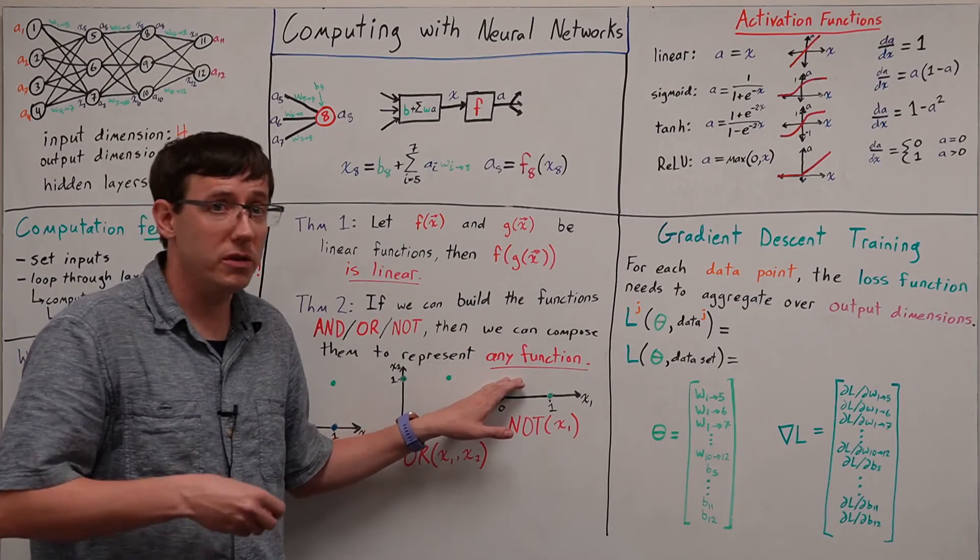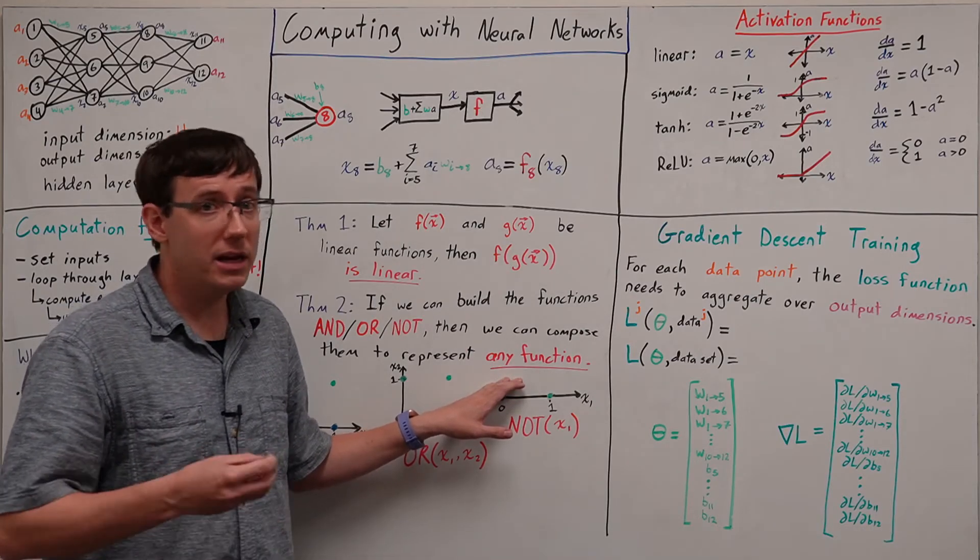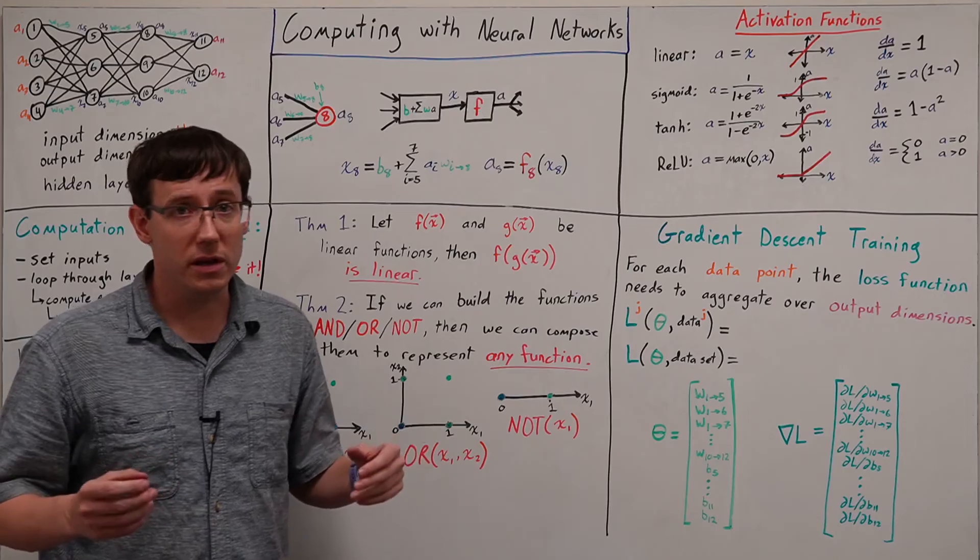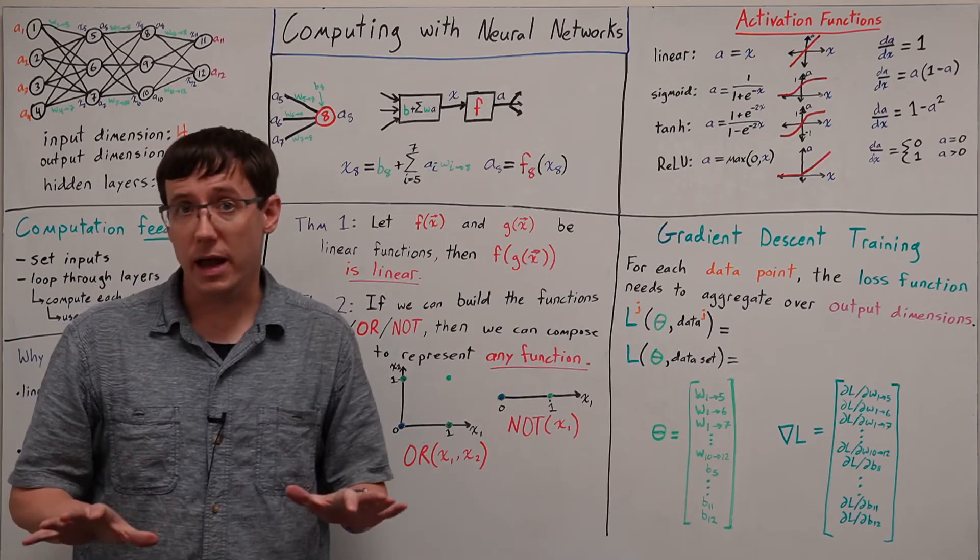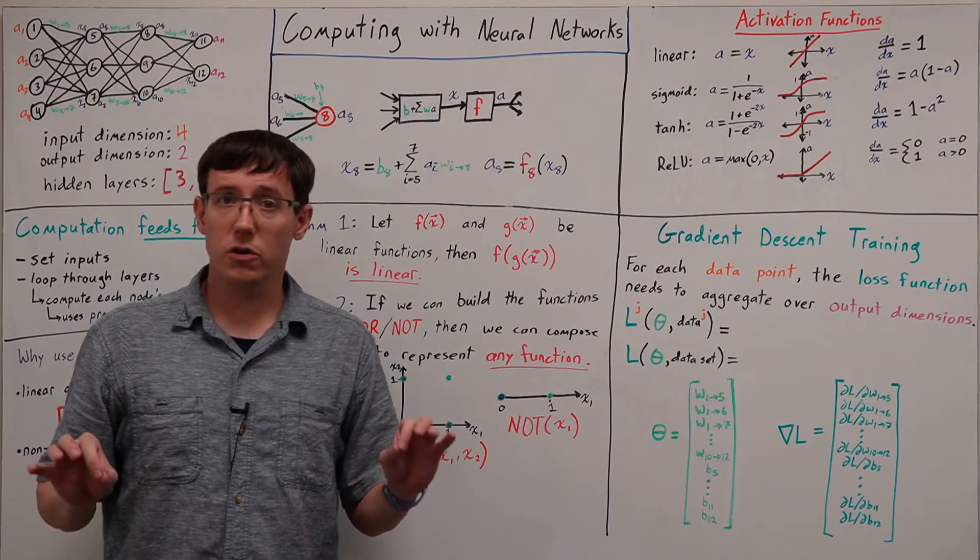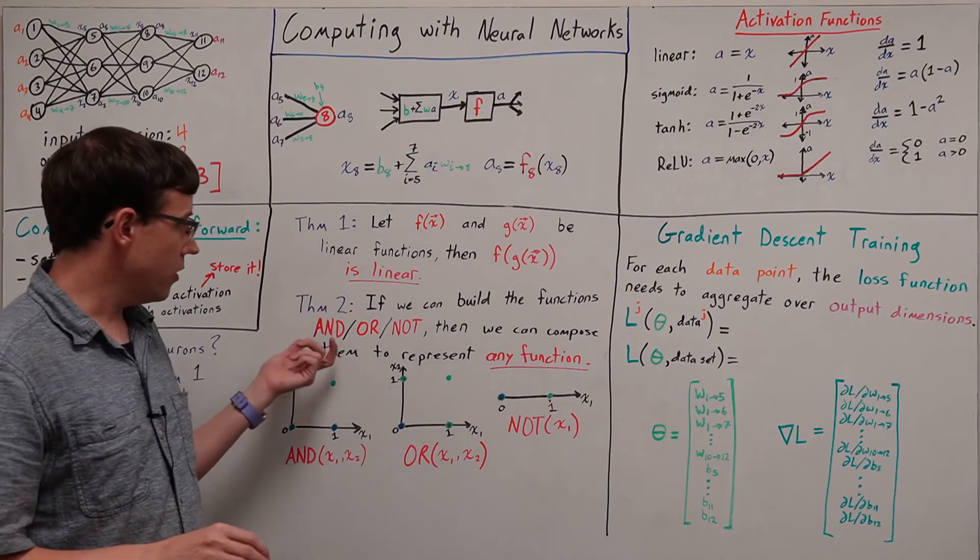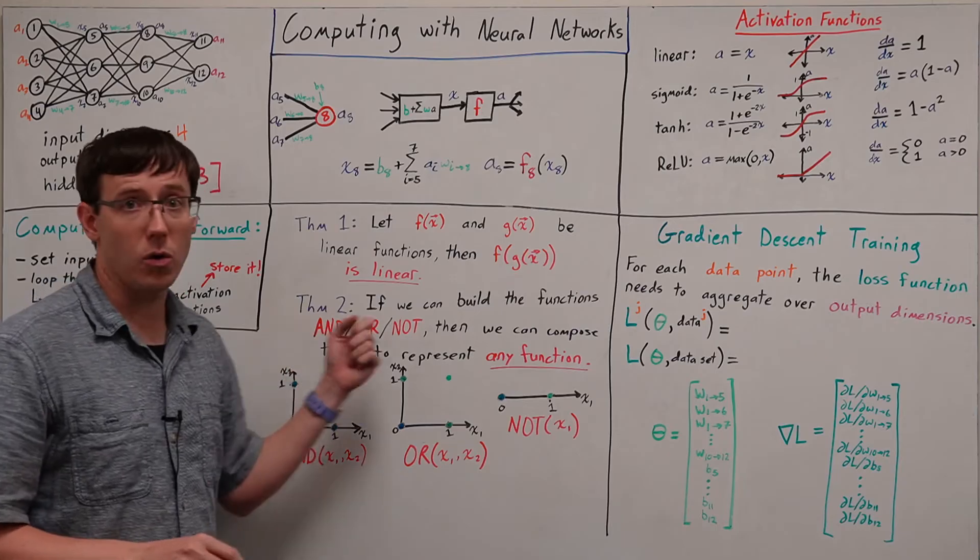And because computers are built using Boolean logic, any Boolean function really means any function we could possibly compute. Once again, I'm not going to prove this theorem, but I do want to show you how we could make neurons that represent and, or, and not.